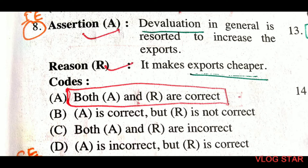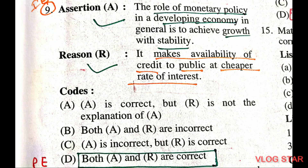Next question, assertion-reason. Assertion: the role of monetary policy in developing countries in general is to achieve growth with stability. Reason: it makes availability of credit to the public at a cheaper rate of interest. Both assertion and reason are correct.